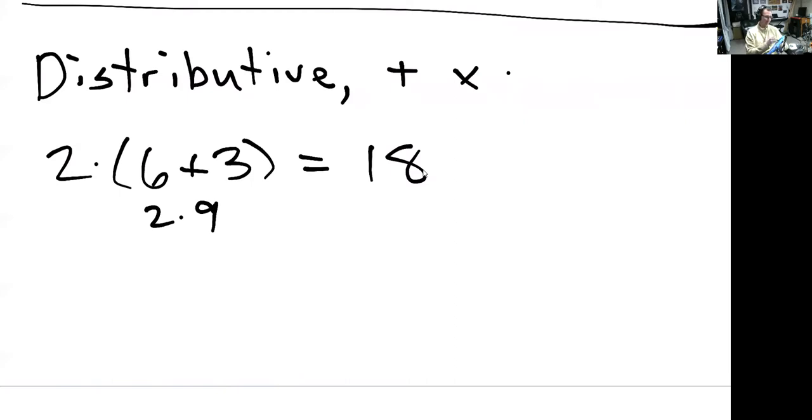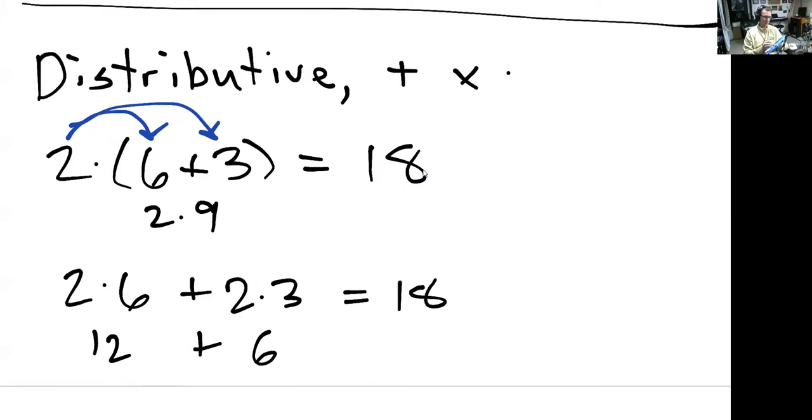Or we can distribute the 2. You can think about like handing something out to multiple people. You're distributing this 2 across the sum. So this becomes 2 times 6, which is 12, plus 2 times 3, which is 6, which gives us overall 18. And these are exactly the same. That's the distributive property for multiplication over addition.